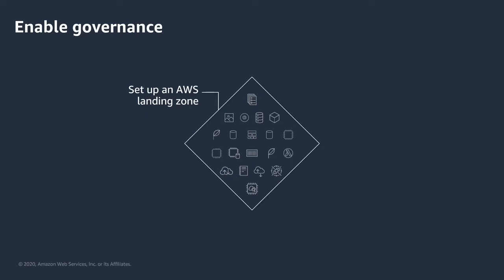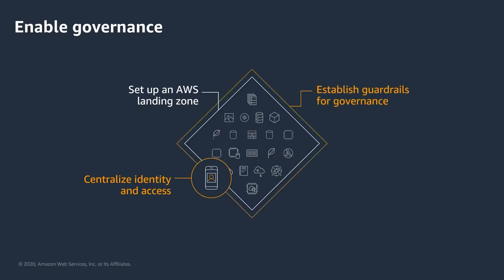There are four main components for governance on AWS. First, it sets up a landing zone — a well-architected multi-account AWS environment set up using AWS Organizations based on best practices. Second is to centralize identity and access management. Third, it allows for establishing guardrails for governance — AWS best practices policies implemented across your environment. These are pre-configured governance rules for security, compliance, and operations, all curated by AWS from working with enterprise customers — for example, requiring MFA for the root user, disabling public read access for S3 buckets, and so on.